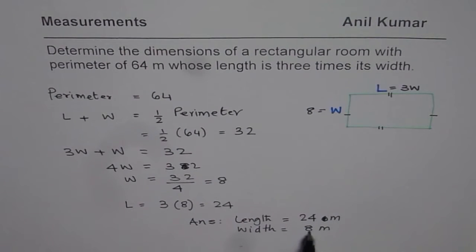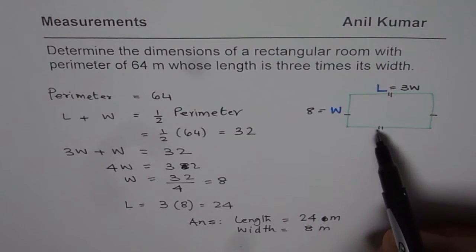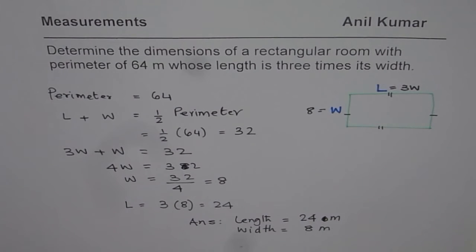You can check length is three times the width. You can also add them when you add 32 is length plus width. Perimeter will be double of 32 which is 64 meters.